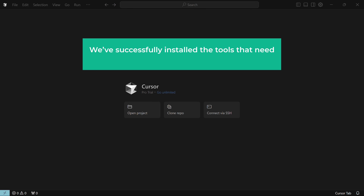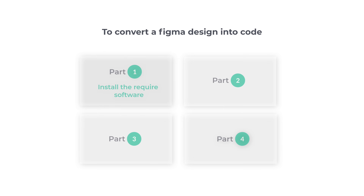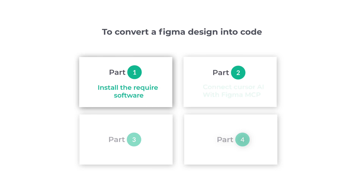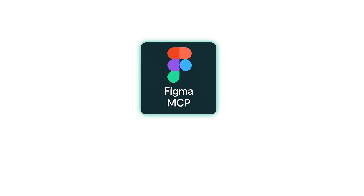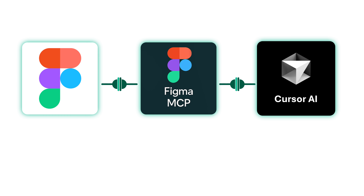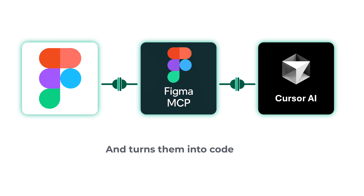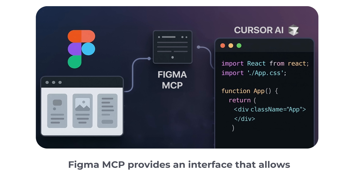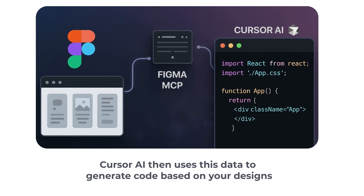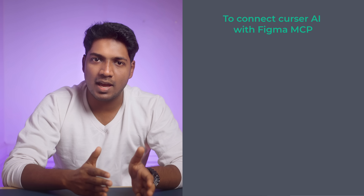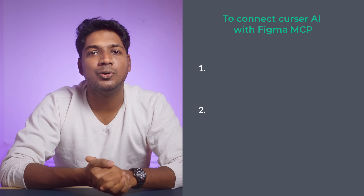We have successfully installed the tools needed to convert our Figma designs into code. Next, let's go to the second part of this video, which is to connect Cursor AI with Figma MCP. Figma MCP is a tool that connects Figma to Cursor AI, allowing Cursor AI to read your Figma designs and turn them into code. It provides an interface for Cursor AI to access Figma design data. To connect them, we are going to do two steps.